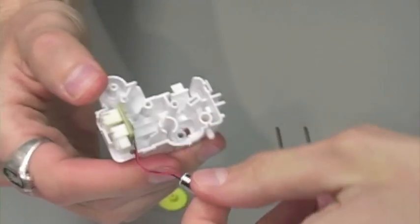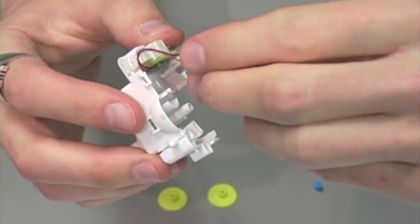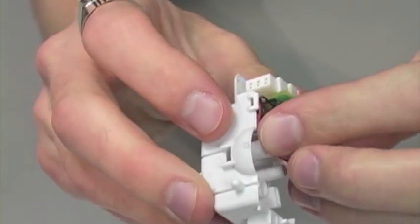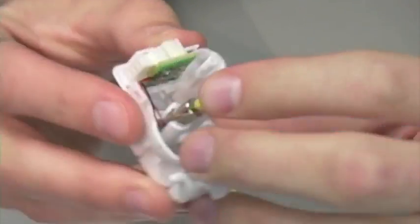Step 1 complete. For step 2 of the gearbox we're just going to get our motor into position, taking care to thread the wires through this small groove before pushing our motor into position.